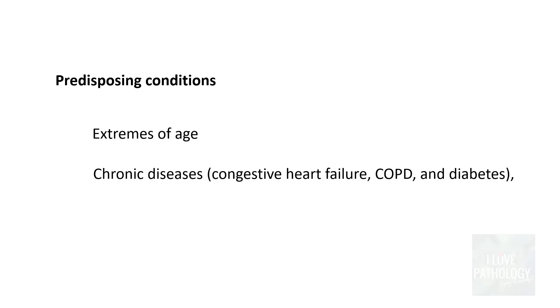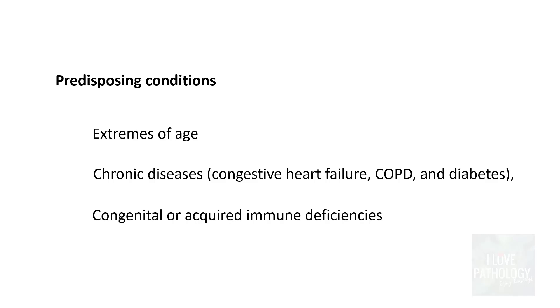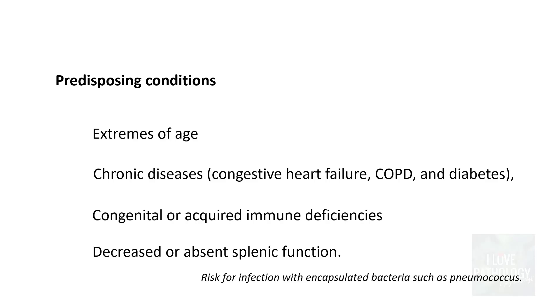We should know the predisposing conditions for community-acquired pneumonias: extremes of age, patients with chronic diseases like congestive heart failure, COPD, and diabetes, as well as individuals with congenital or acquired immune deficiencies. Lastly, decreased or absent splenic function is very important because there is a risk for infection with encapsulated bacteria such as pneumococcus. The spleen is the major site of production of anti-polysaccharide antibodies, which are the dominant protective antibodies against encapsulated bacteria.